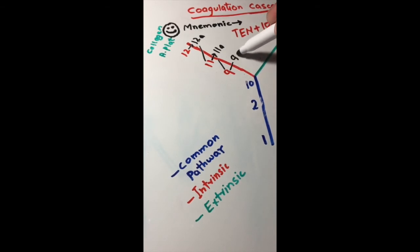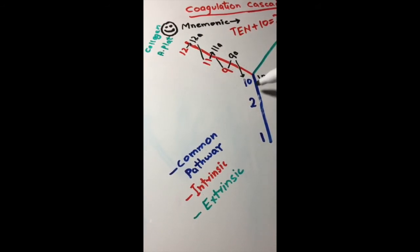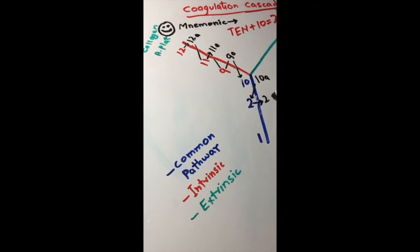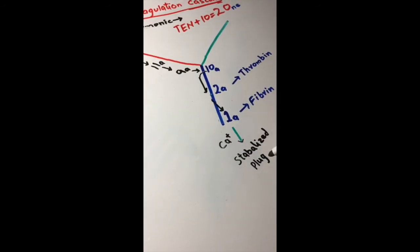into 9a, which eventually helps 10 to get into 10a. 10a converts 2 into 2a, and 2a converts 1 into 1a. This 1a uses calcium to make a stabilized plug.